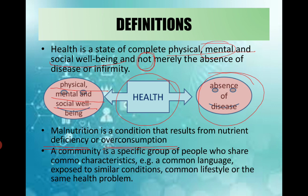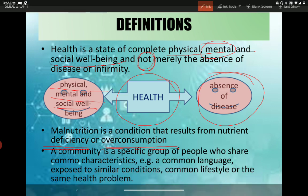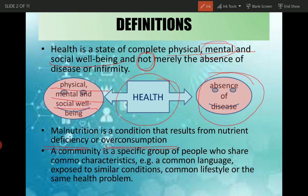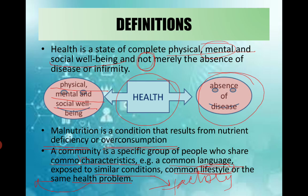The next topic is a community. A community is a specific group of people who share common characteristics - either a common language, exposure to similar conditions, common lifestyle or health problems. Suppose you are staying close to a factory, all of us will have the same problems: pollution problems, common lifestyle. Health problems like today we are all in this scenario of corona, which is the latest thing happening.